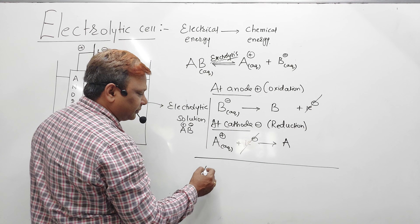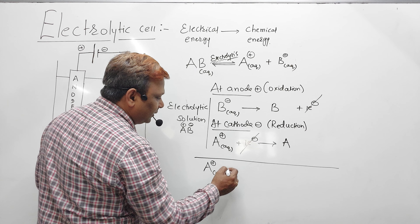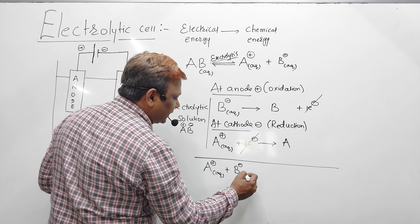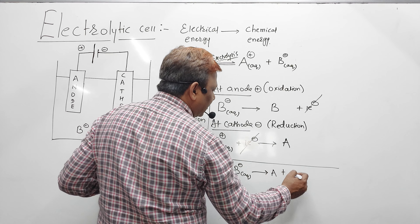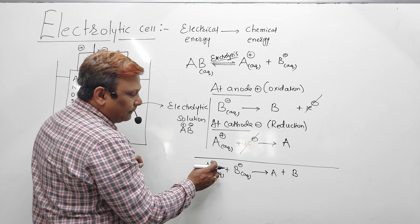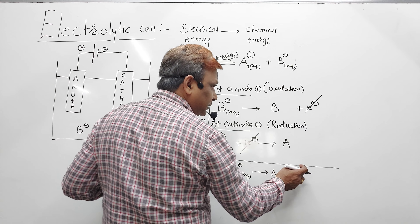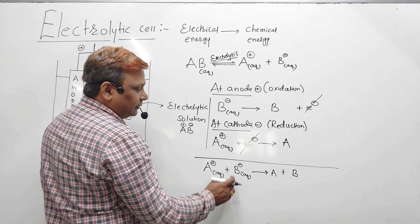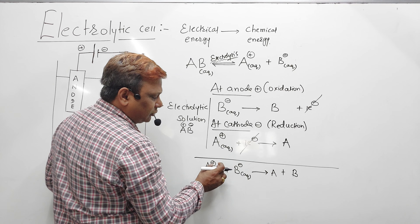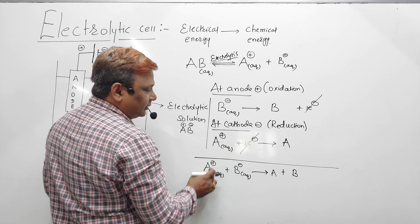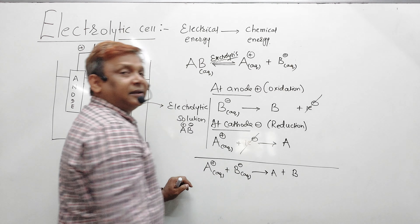Adding both half reactions, the electrons cancel. A plus (aqueous) combines with B minus (aqueous). The result: A undergoes reduction at the cathode and B undergoes oxidation at the anode. Reduction takes place at the cathode — this is the net cell reaction.